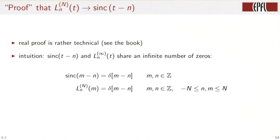The intuition is that both sinc of t minus n and ln at infinity of t share the same set of infinite number of zeros, which is given here in the last two formulas of the slide.